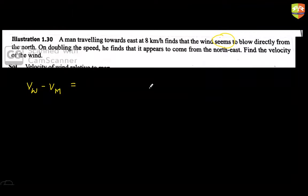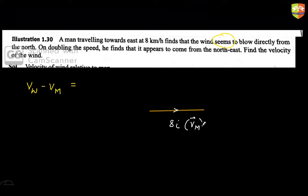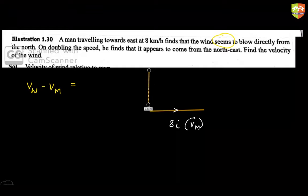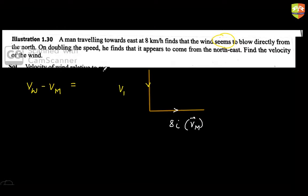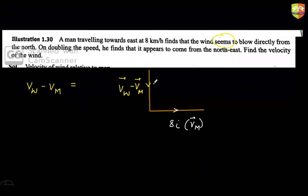Let me make a diagram. The man is moving in the east direction: v_man = 8i. He sees the wind coming from the north, so v_wind minus v_man is directed along the negative y-axis — call it minus p*j.